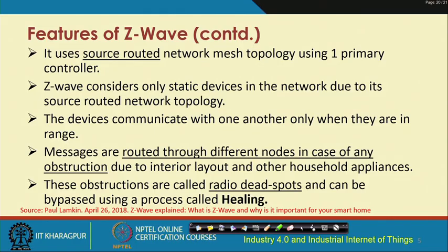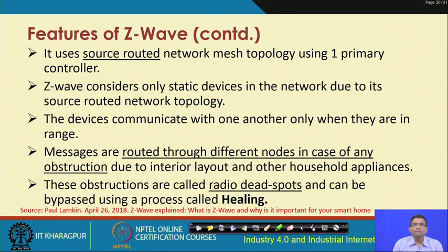The routing scheme used in Z-Wave is source routing, where a source node determines the route and sends the packet through the network using routes determined by that source node. Z-Wave considers only static devices due to its source-routed network topology. Messages are routed through different nodes in case of any obstruction. Due to interior layout and household appliances, obstructions create radio dead spots, which can be bypassed using a process in Z-Wave known as healing.